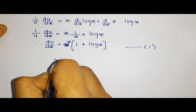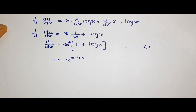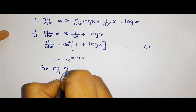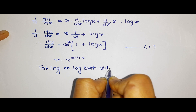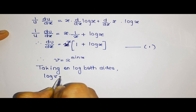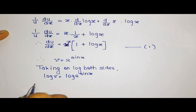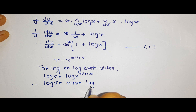Now we move to the second part of the equation. v is equal to 2 raised to sin x, and we have to find dv by dx. Again, by taking log on both sides, we get log v is equal to log of 2 raised to sin x. Using the power rule of logarithmic properties, this becomes sin x into log 2.